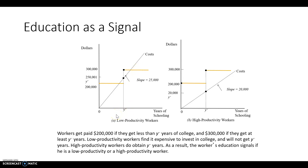They want this to work as a signal, so they definitely don't want to end up paying those high ability or high productivity workers too little, and they don't want to end up paying the low productivity workers too much. So they need to set these wages relative to what it costs these different workers to go to school.